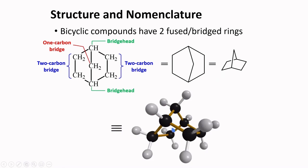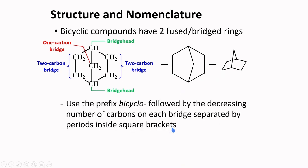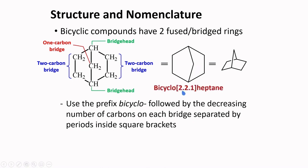A ball-and-stick model can represent the bicyclic compound. To name a bicyclic compound, use the prefix 'bicyclo' followed by the decreasing number of carbons on each bridge, separated by periods inside square brackets. For this compound with 7 carbons overall and bridges of 2, 2, and 1 carbons, the name is bicyclo[2.2.1]heptane.